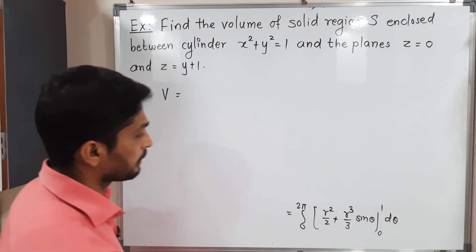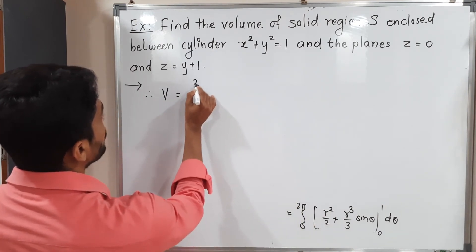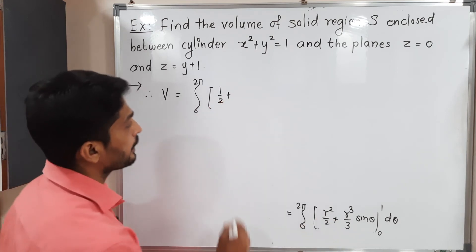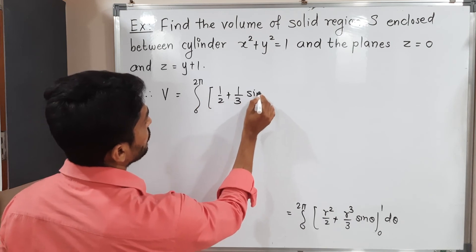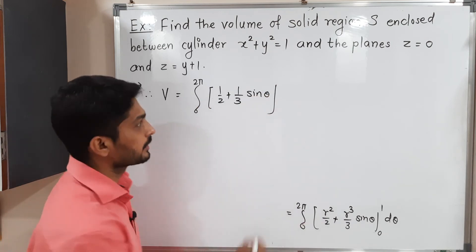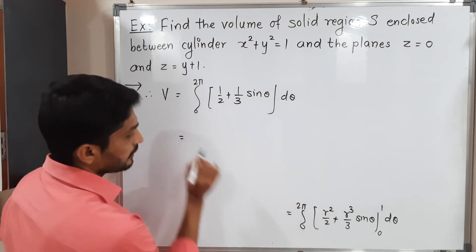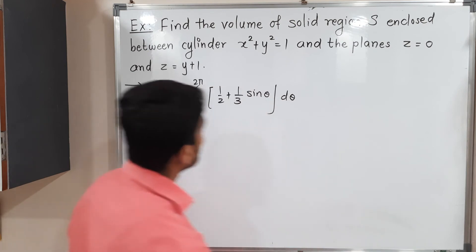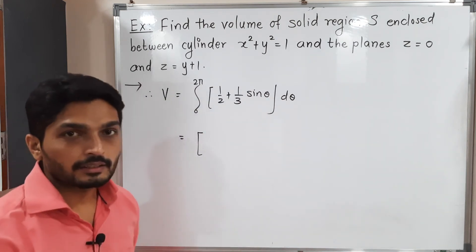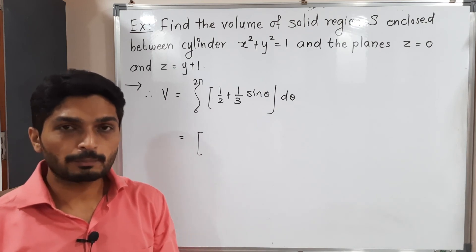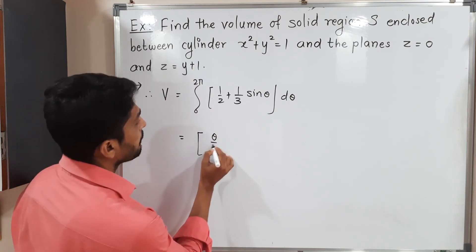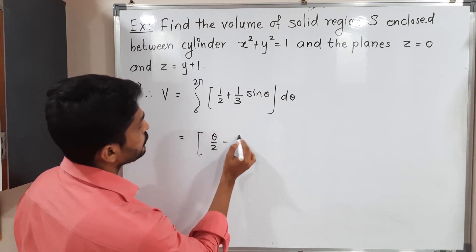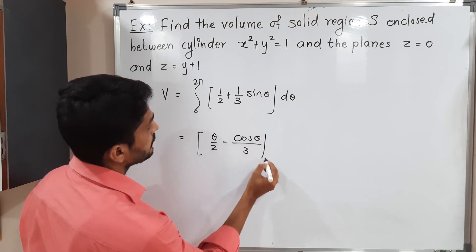Putting in the upper limit r = 1 gives 1/2 + (1/3)sinθ; the lower limit gives 0. So we now integrate 0 to 2π of [1/2 + (1/3)sinθ] dθ. Integration of 1/2 with respect to θ gives θ/2.